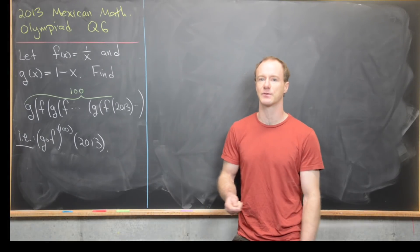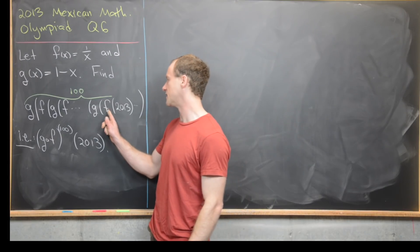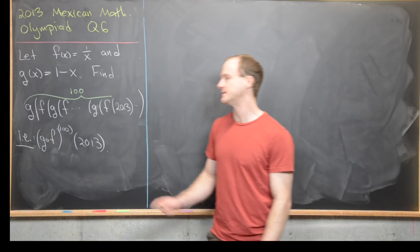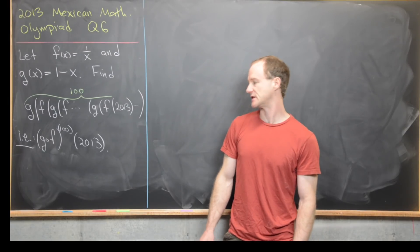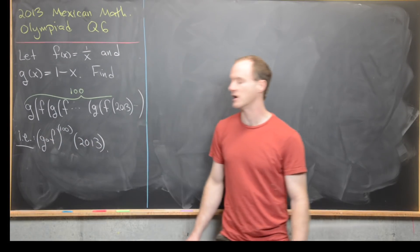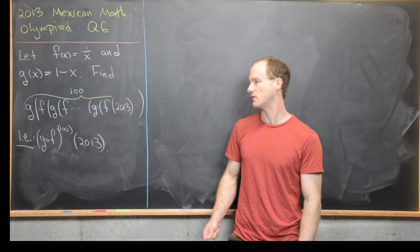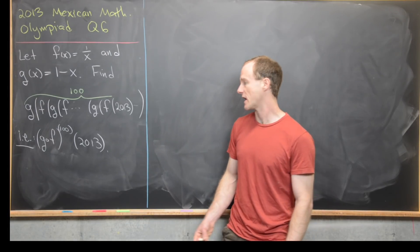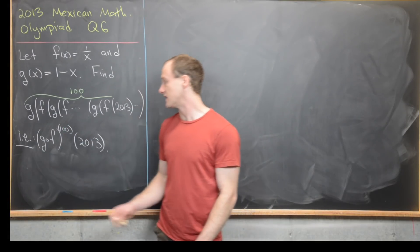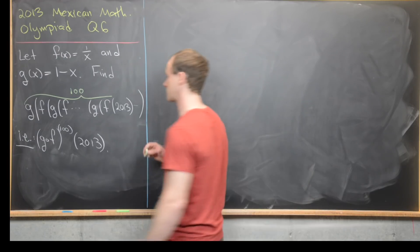In the details of the problem, f appears 100 times and g appears 100 times as well. In other words, we're taking the composition of g∘f and then composing that with itself 100 times. Since we're doing that, maybe we should look at that composition first.